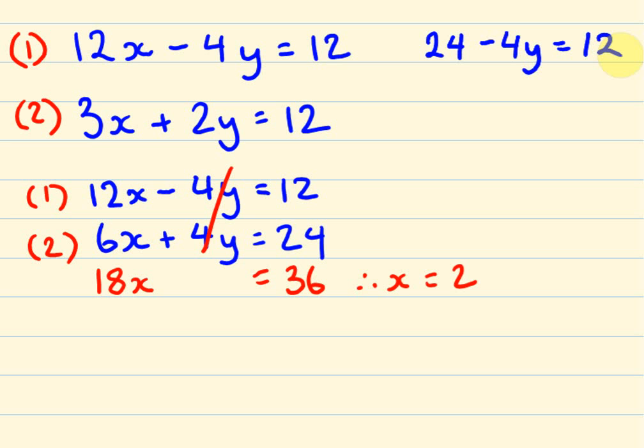What this means is if we take 24 off both sides, we're going to end up with -4y, because I'm taking the 24 off there. I'm going to take 24 off the other side, so 12 - 24 is -12.